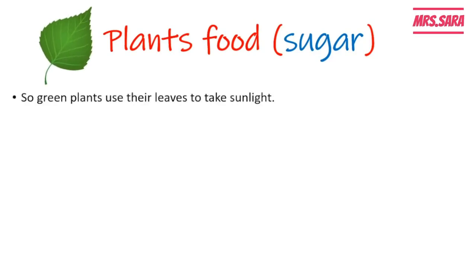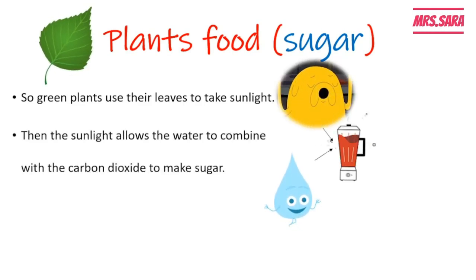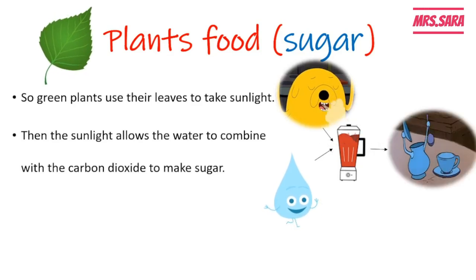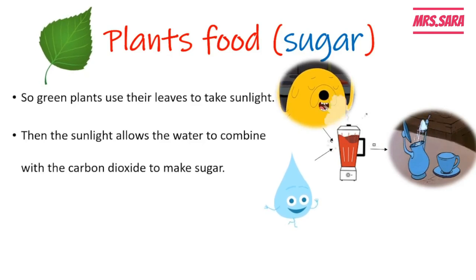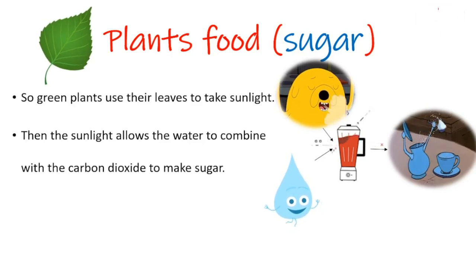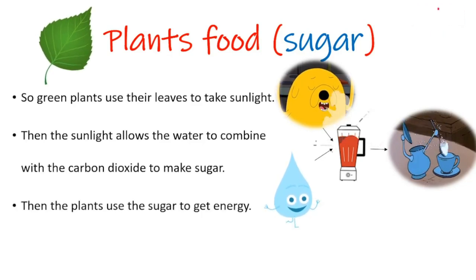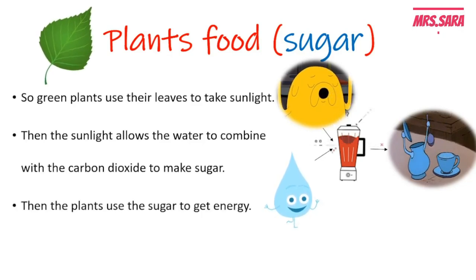Green plants use their leaves to take sunlight, and the sunlight allows the water and the carbon dioxide to combine and to make sugar. So the sunlight allows the water from the soil and the carbon dioxide of the air to combine with each other to make sugar, which is the food of the plants. The plants then use the sugar to get energy.